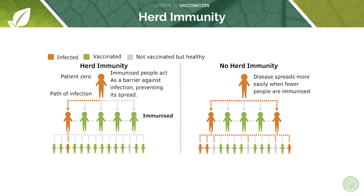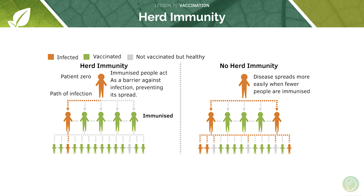If we don't vaccinate enough people there are more people susceptible to infection. Here we see only three out of five people vaccinated, leaving two routes for the disease to spread from person to person, whereas when more people are vaccinated all those routes are blocked.